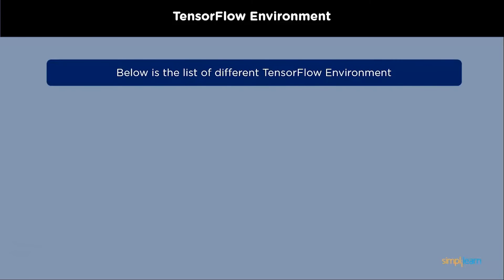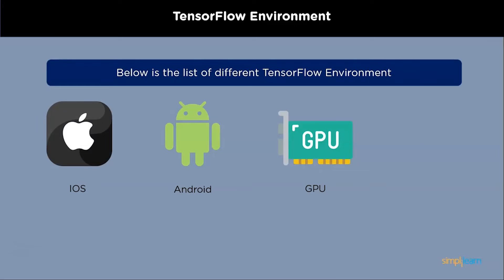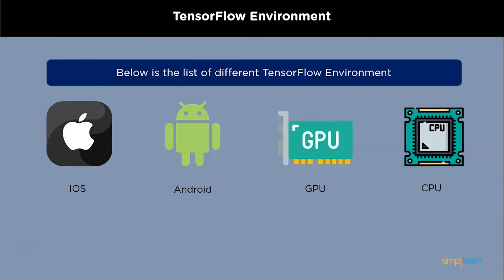Most practical targets can run TensorFlow applications, including local machines, cloud clusters, iOS, Android smartphones, CPUs, and GPUs. TensorFlow can be run on Google's specialized TensorFlow processing unit silicon if you use the company's own cloud for further acceleration. But the models that TensorFlow produces can be installed on almost any device and used to make predictions.